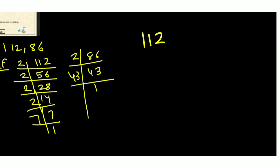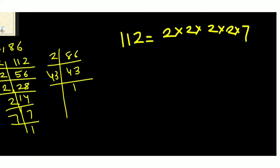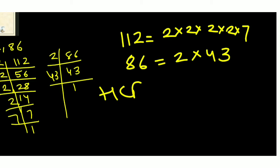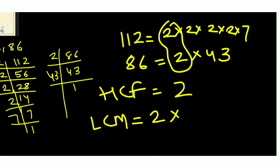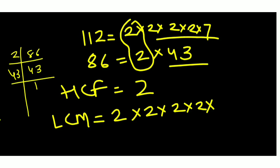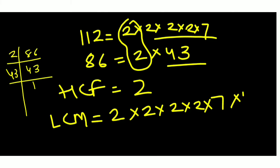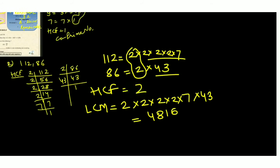The prime factorization of 112 is 2⁴ × 7. The prime factorization of 186 is 2 × 43. The common factor between them is 2, so HCF = 2. For LCM, we take all prime factors: 2⁴ × 7 × 43. Multiplying these together gives LCM = 4816.